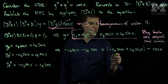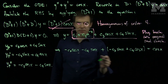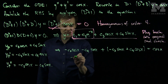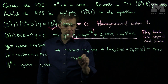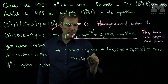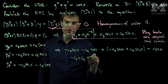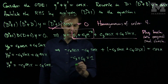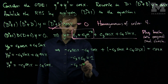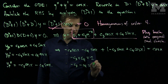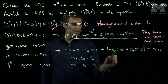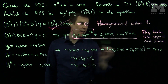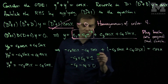Combining like terms: the coefficient of cos(x) is (−c₃ + c₄), and the coefficient of sin(x) is (−c₃ − c₄). So we get the system: −c₃ + c₄ = 1, since that's the coefficient of cosine on the right hand side, and −c₃ − c₄ = 0, because there is no sine on the right hand side.